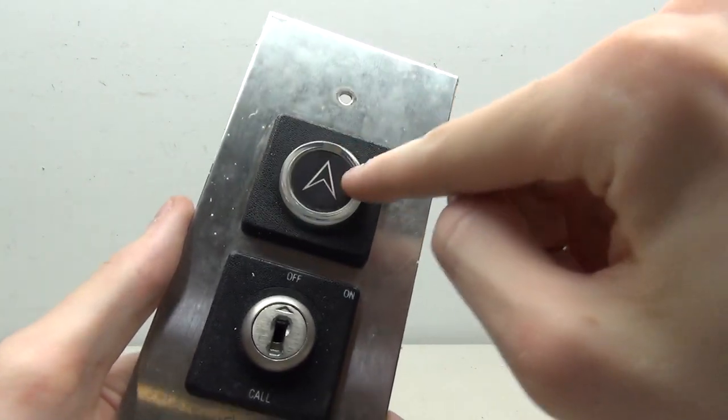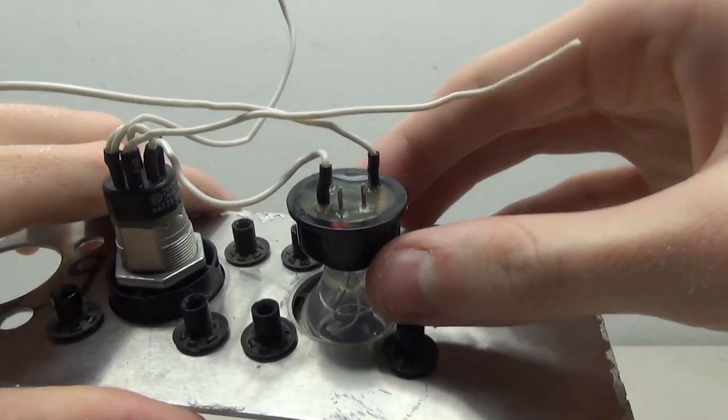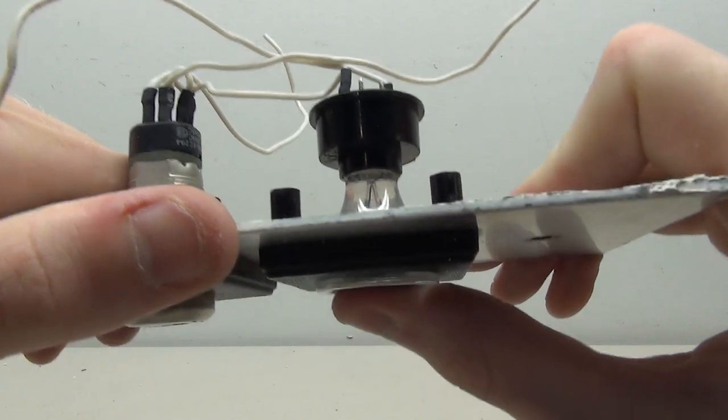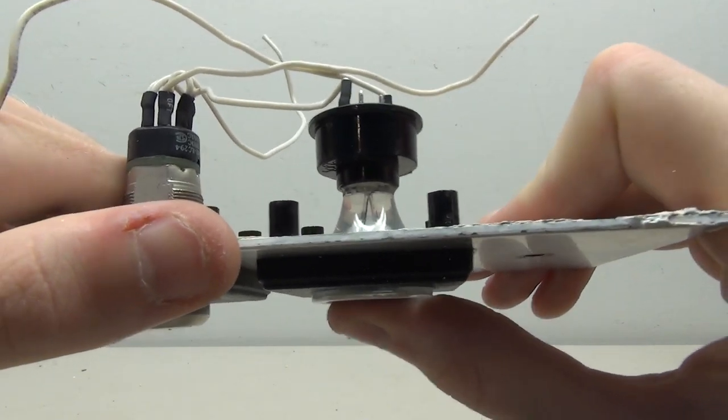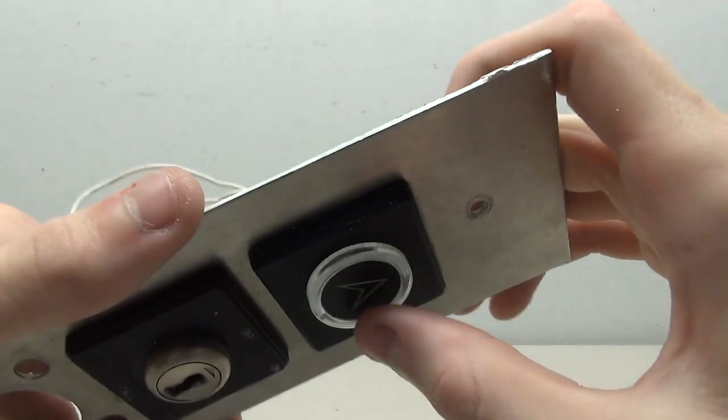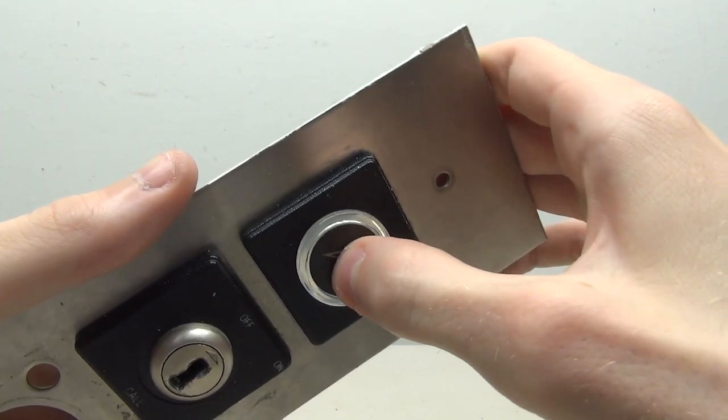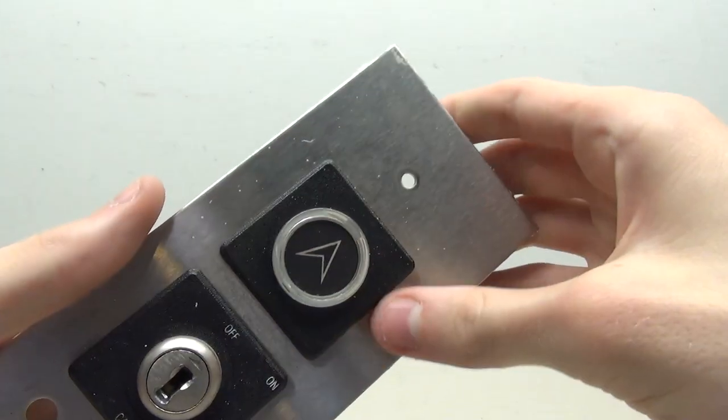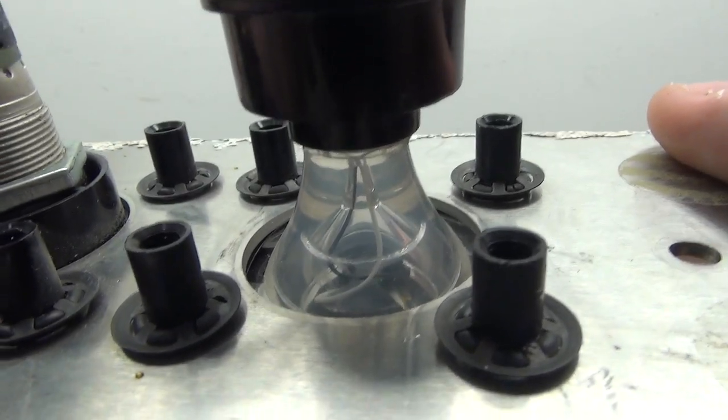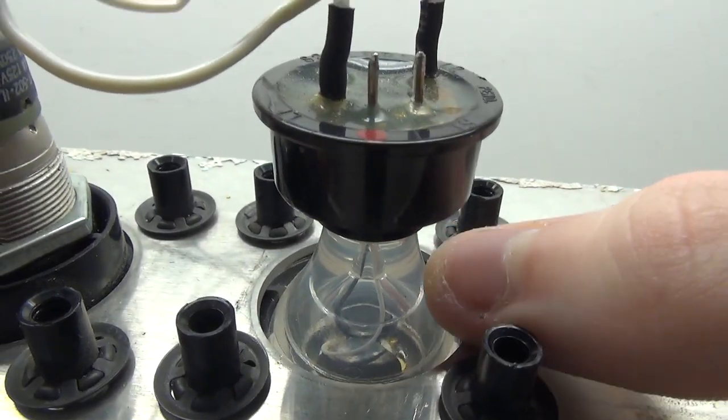Back to the actual button - this is what these buttons look like from behind. Something quite interesting is if I push on it, you'll see that the whole thing moves back and forth. This movement doesn't actually affect the way the button works at all. This is just kind of a fake movement to make it feel like you're pushing the button when in reality that movement doesn't do anything.